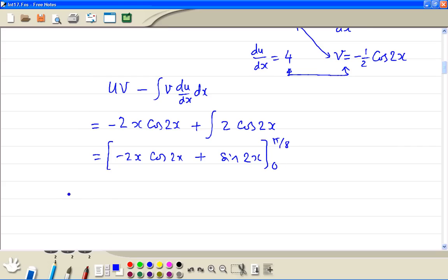Substitute the upper limit: we get minus 2 times pi over 8 cosine 2 times pi over 8 plus sine 2 times pi over 8. And if you look at the lower limit, when you put 0, you get minus 0, sine of 0 is 0.